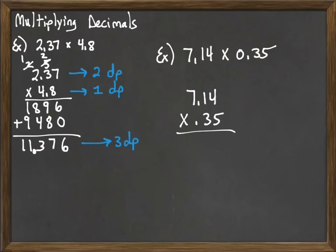But in the end, we'll remember that we have 2 in the first one, 2 in the second, so our answer will have to have 4 of them. So then we multiply. 5 times 4 is 20.